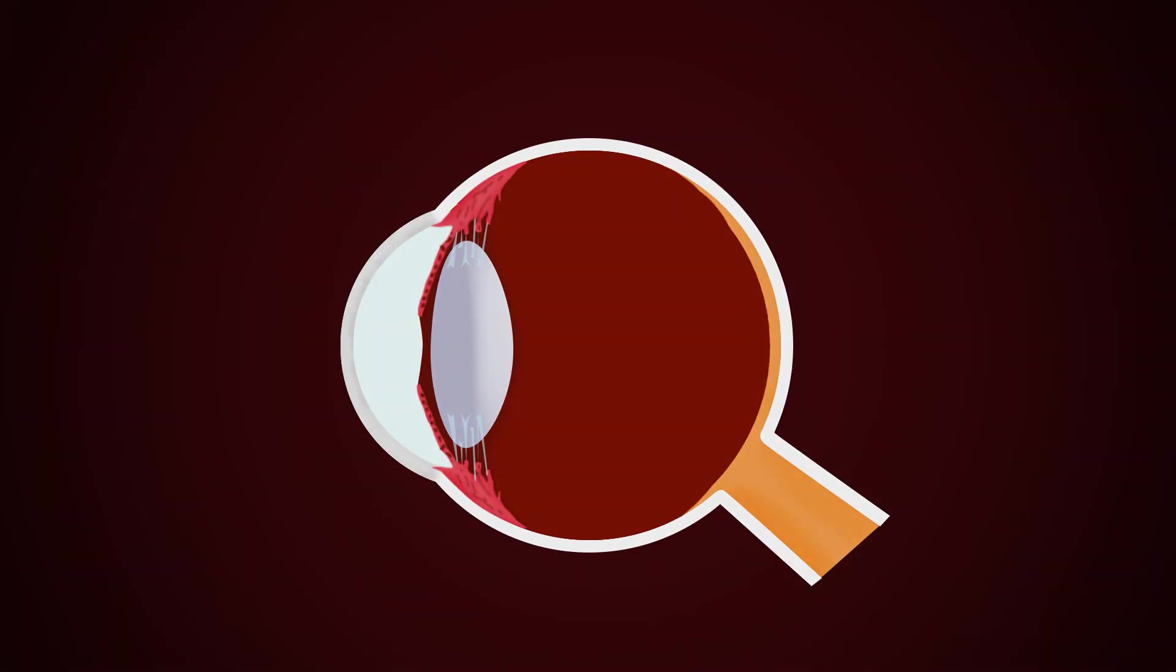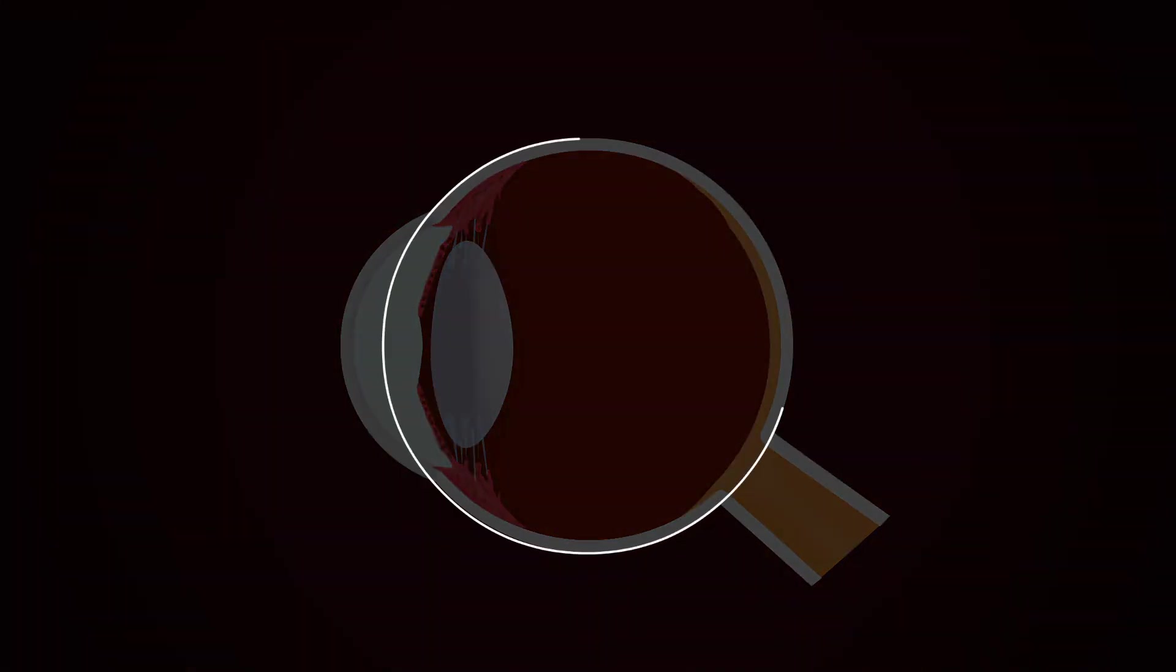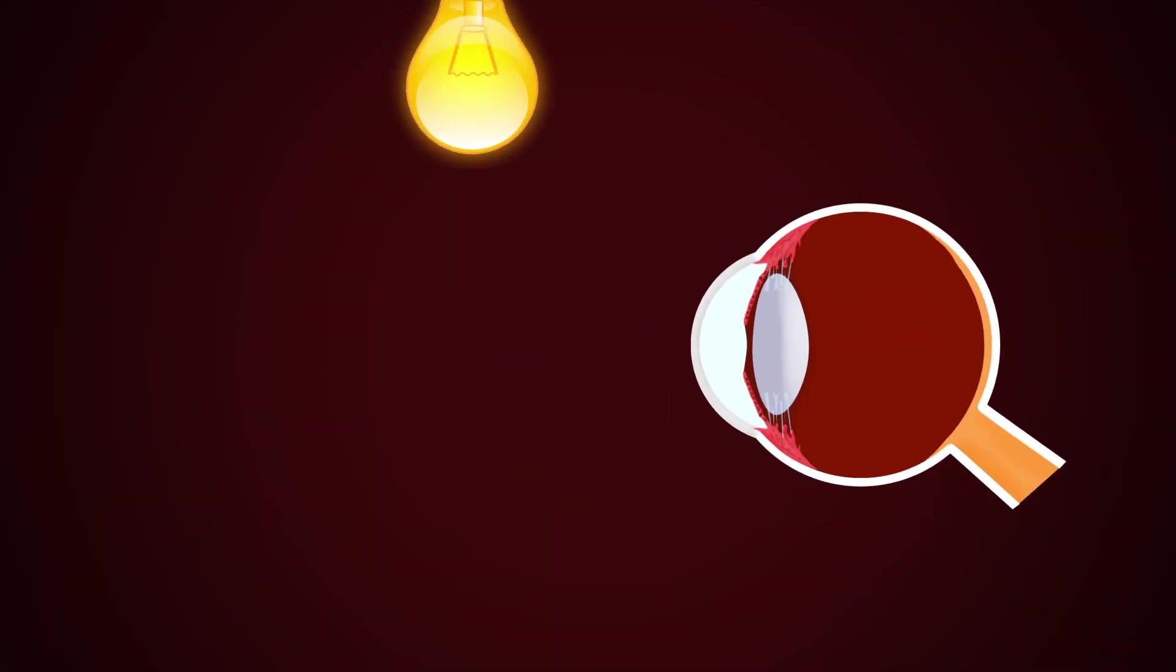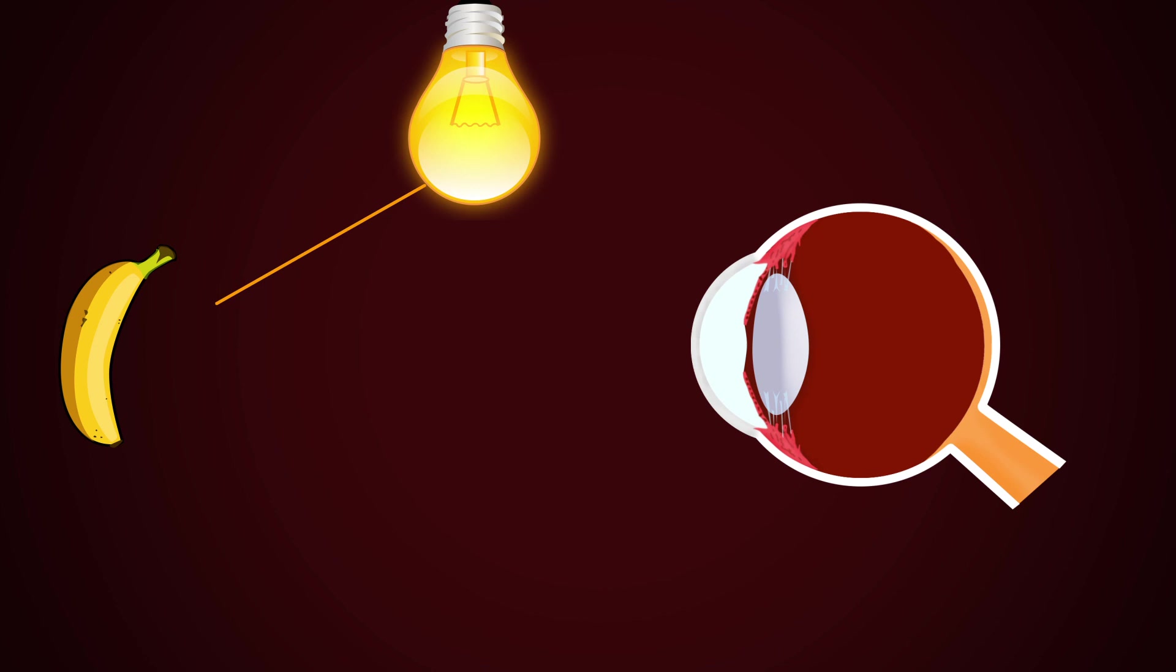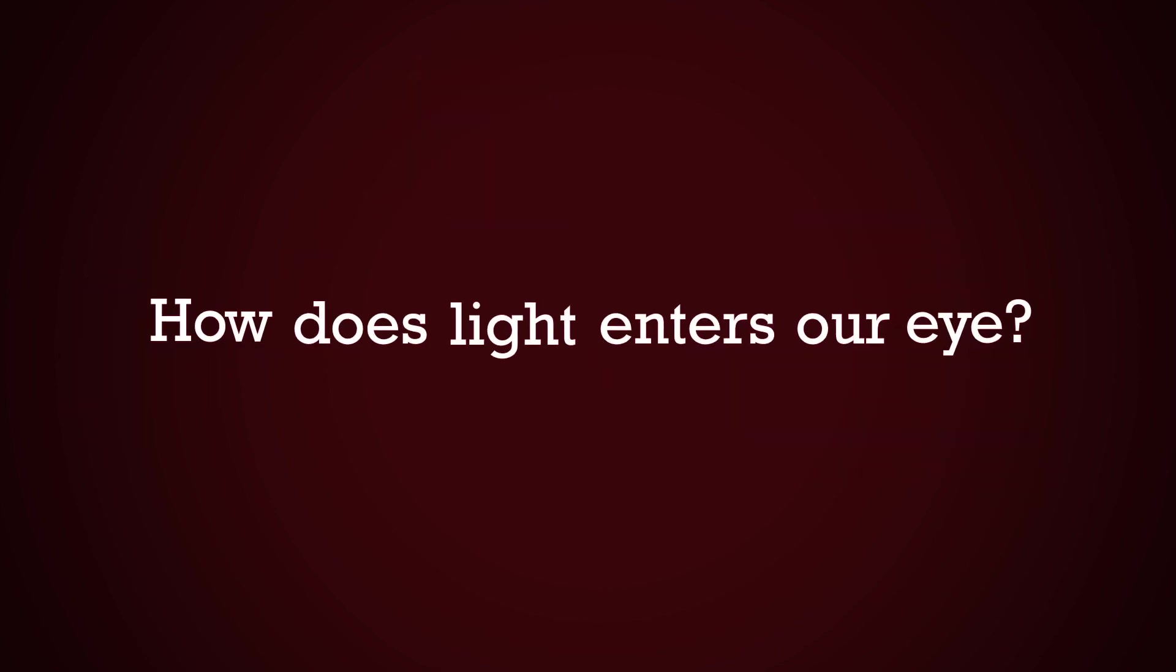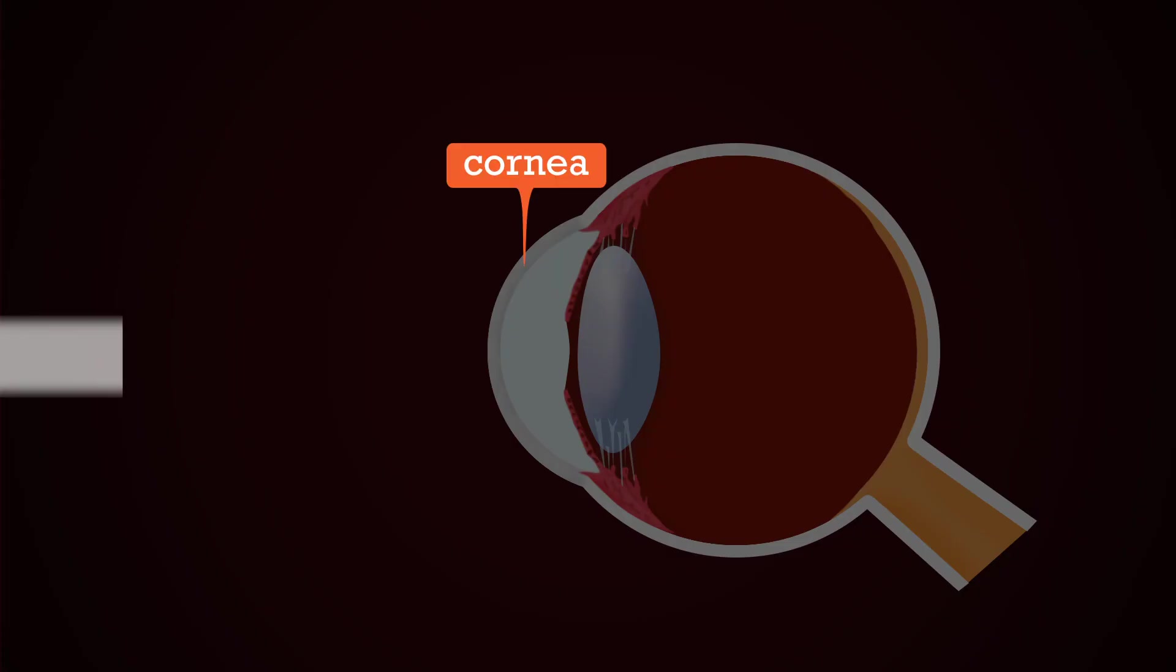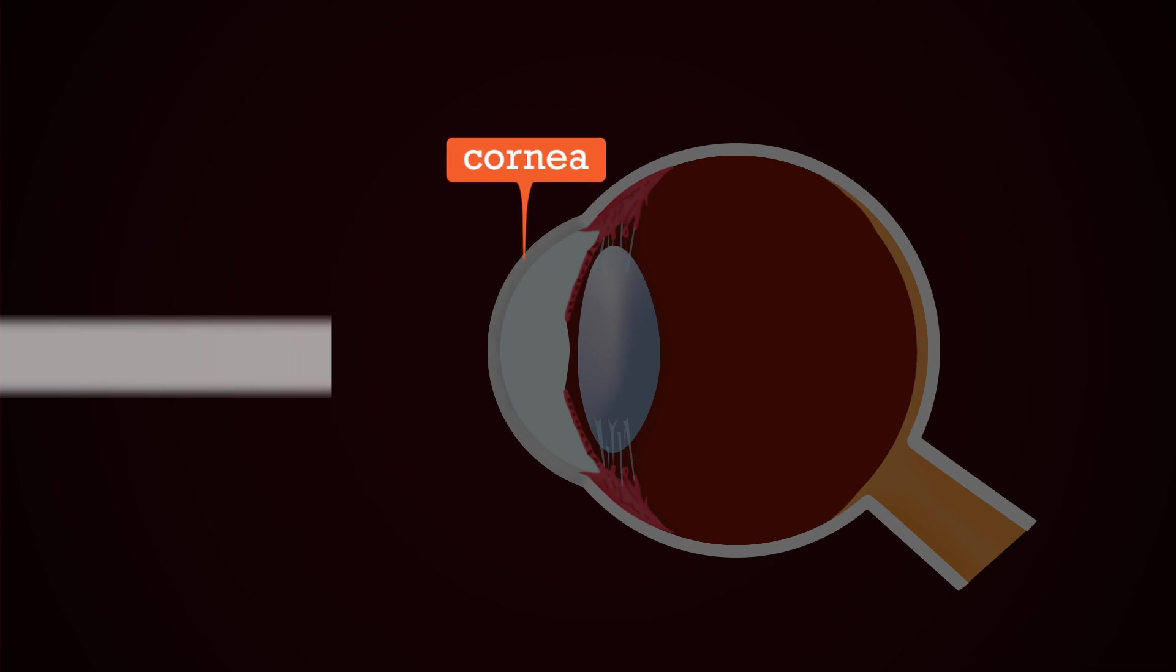The eye is spherical in shape and is about 2.3 centimeters in diameter. We are able to see a thing when light falling on that object reflects to our eyes. That means the light should enter our eyes.